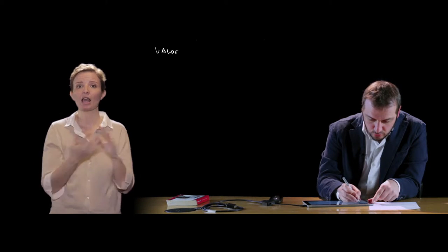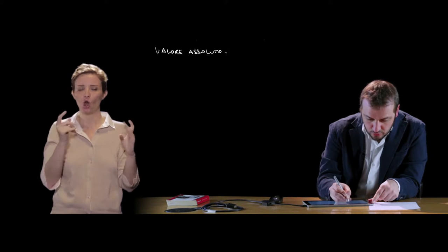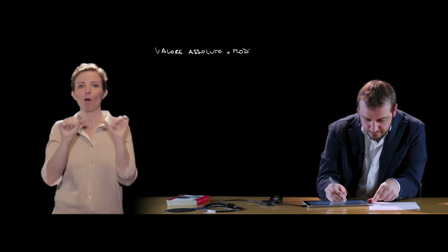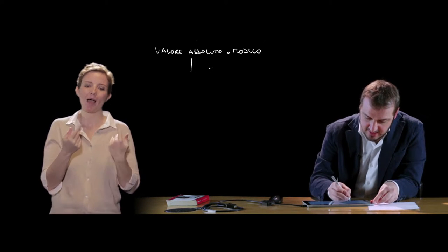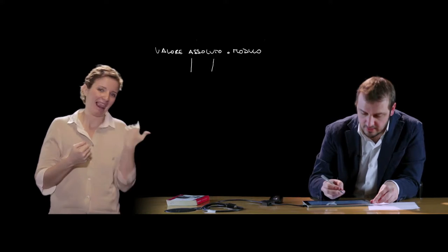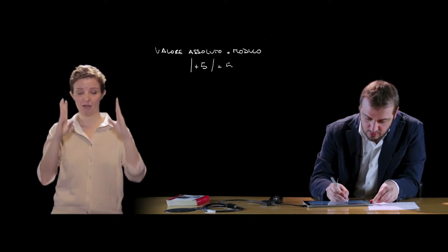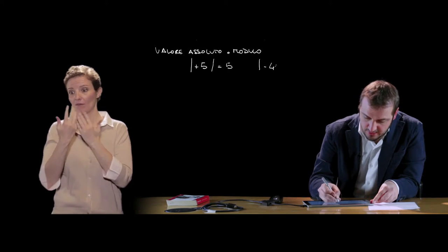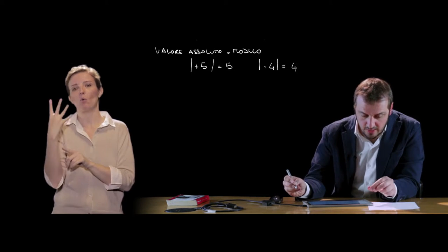The absolute value is also called modulus. The modulus of a number is nothing more than the number stripped of its sign, and in mathematics it is indicated with two vertical bars. So the modulus of +5 equals 5, while the modulus of -4 corresponds to the opposite of -4, that is, 4.